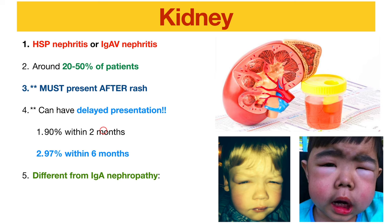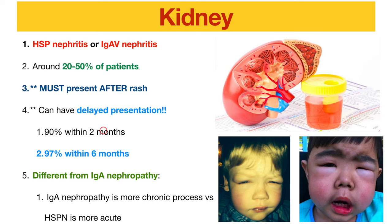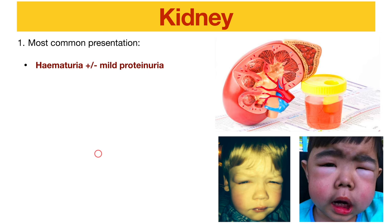One may ask if HSP nephritis is the same as IgA nephropathy, since both involve IgA immune complexes. They are actually different: IgA nephropathy is more of a chronic process with repeated attacks to the kidney, while HSP is usually a more acute process.